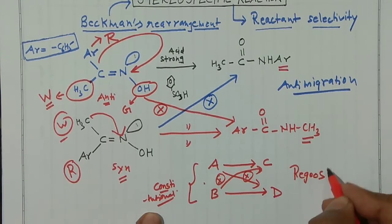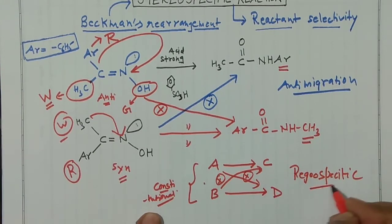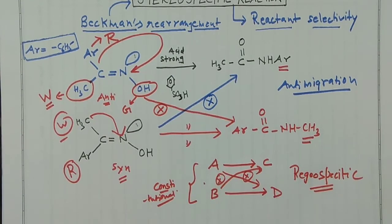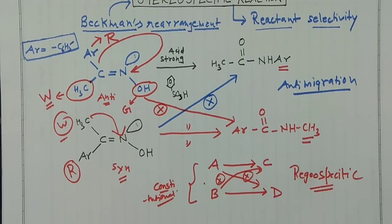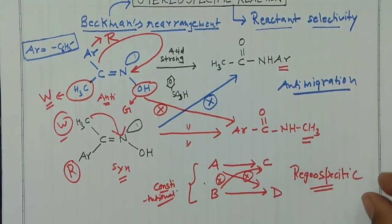Regiospecific reactions require different reactants that are structural (constitutional) isomers, while stereospecific reactions require reactants that are stereoisomers. So to summarize the last two or three classes: I have explained four terms — regioselective, stereoselective (including enantioselective and diastereoselective), chemoselective, and now stereospecific and regiospecific reactions.